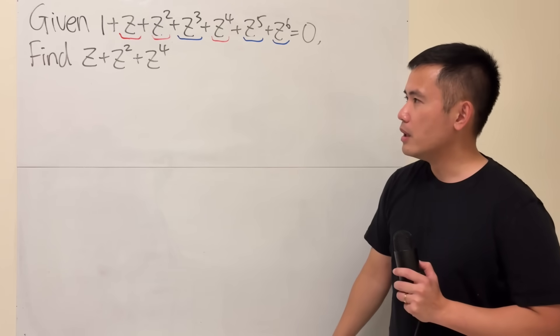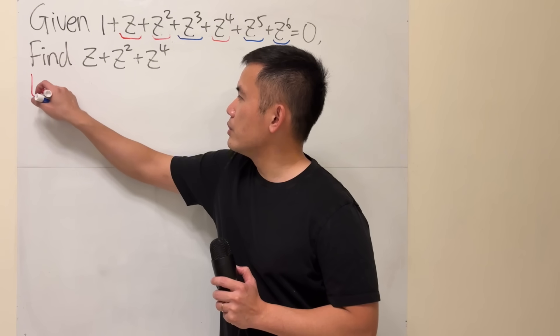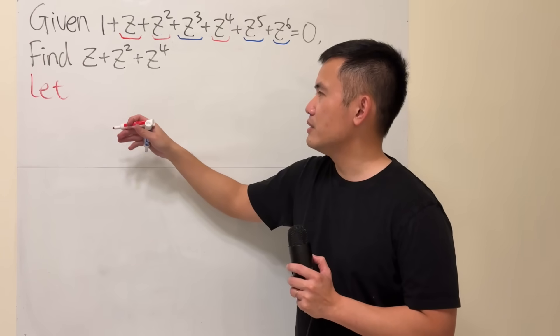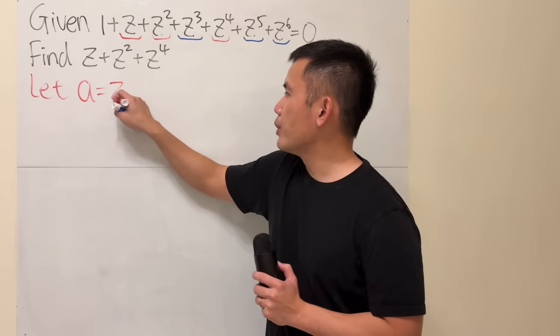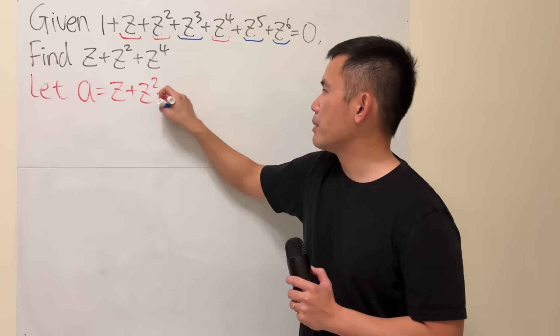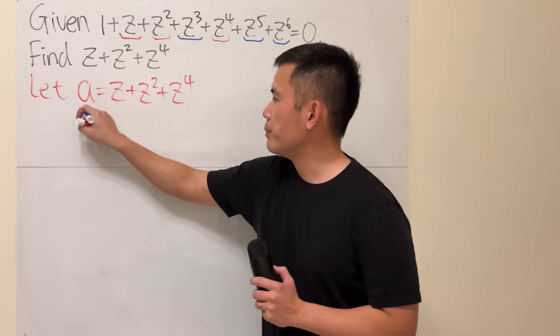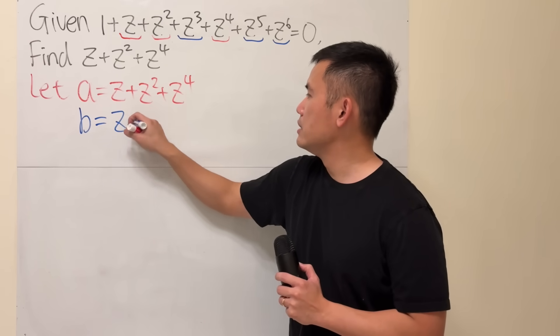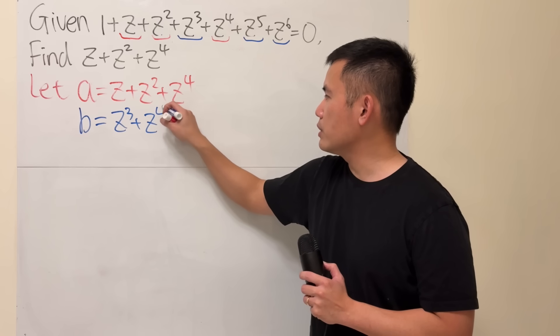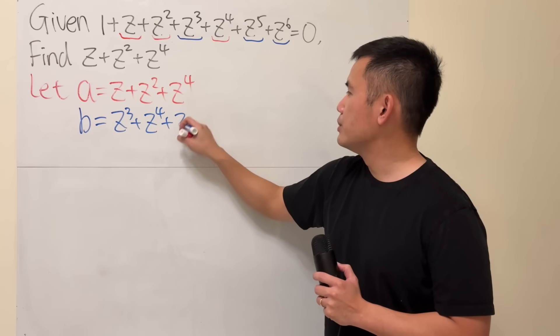Now, let me show you. First, I'm just going to call this to be something easier to write. Let's say a. a is equal to z plus z squared plus z to the fourth power.